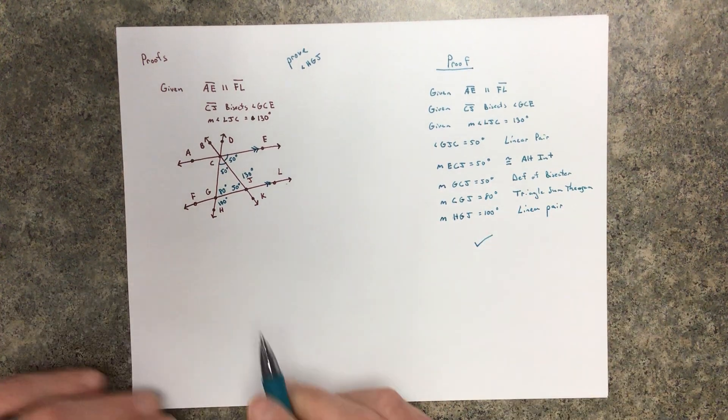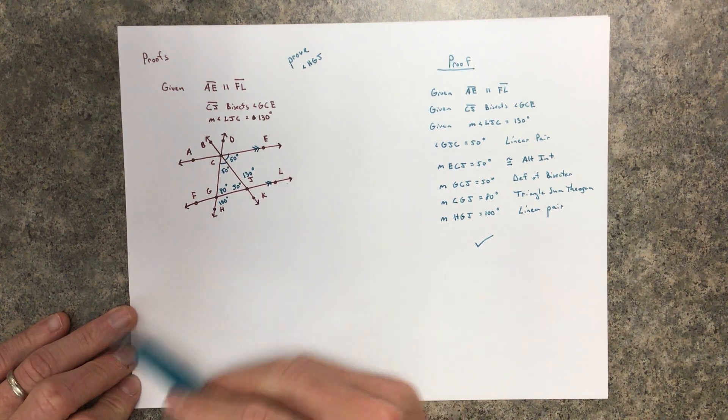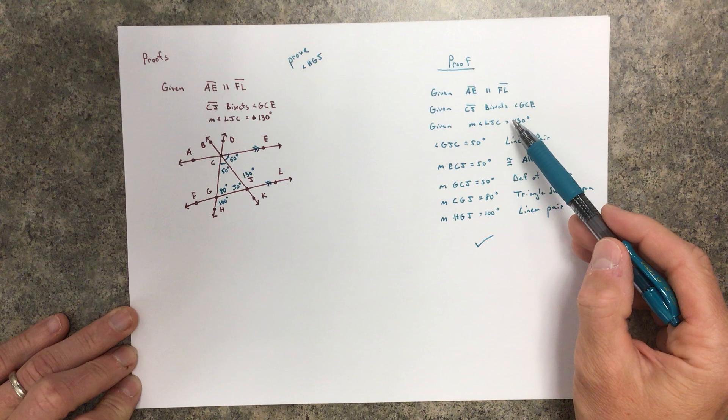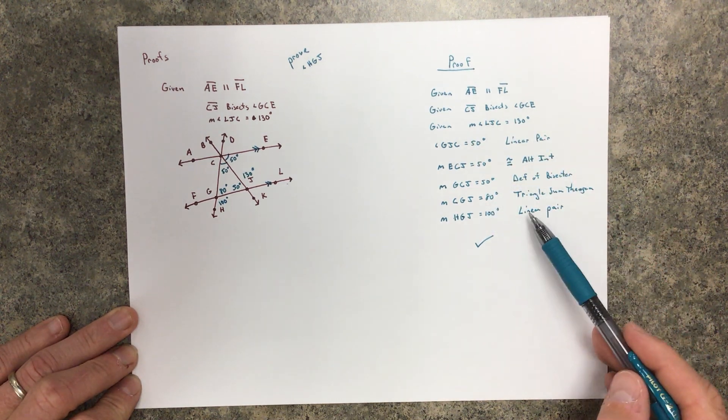Checkmark. We proved this angle was 100 degrees. We started with the givens, we made conclusions, and we justified every single one of them.